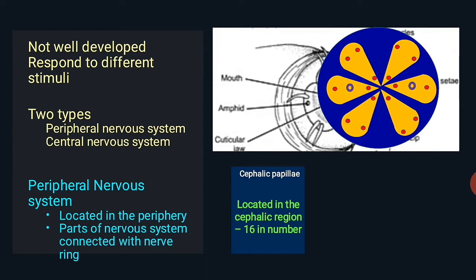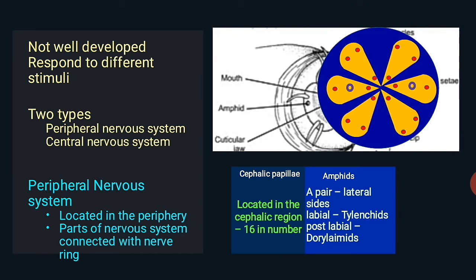Next, about amphids: each one occurs on the lateral side, opening through a pore-like aperture. The position is labial in Tylenchida and post-labial in Dorylaimida. There is also an amphidial nerve that connects indirectly by a commissure called the lateral ventral commissure.